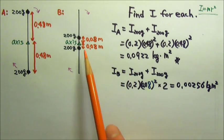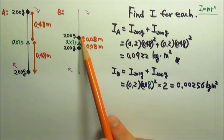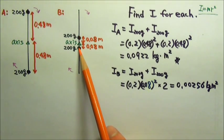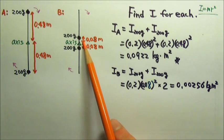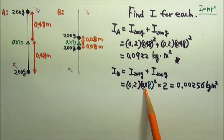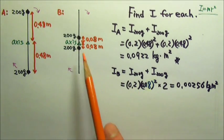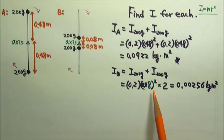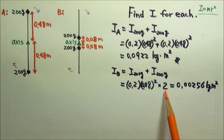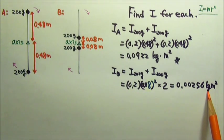Now we do the same thing for B. There are also two pieces of point mass. This time, each piece of point mass is 0.08 meters from the axis. So the I is mr squared, 0.2 times 0.08 squared. Since both of these give us the same amount of rotational inertia, we just have to multiply this by 2, and we get 0.00256 kilograms meters squared.